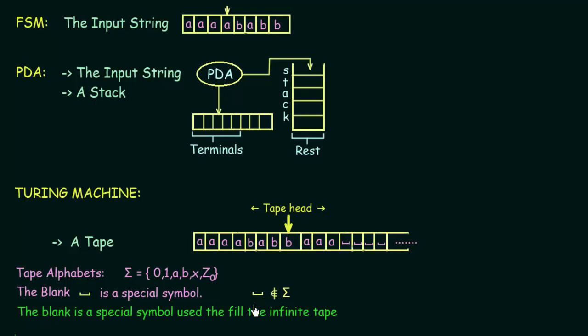That means the blank symbol is not a part of the tape alphabets or the input symbols. It is just a special symbol that is used to fill the infinite tape. As we are having an infinite tape, the blank or the empty cells are filled with this special symbol known as the blank symbol. So this is the basic data structure that we have in our Turing machine. The main things to remember are: the tape is an infinite sequence, the tape head is the position where the current control is present, and the empty cells are filled in by a special symbol known as the blank symbol.